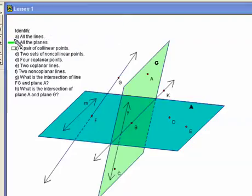Problem B, let's define all the planes. Well, there's just two planes here. And we can write the word plane, P-L-A-N-E, plane A and G.